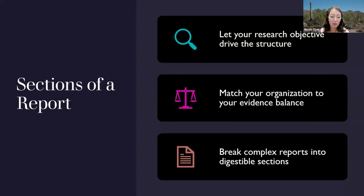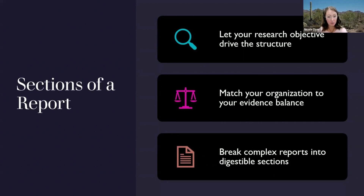After seeing that example, hopefully you're thinking of different ways to organize different parts of your research into sections within your report. Remember to let your research objective drive the structure and match your organization to your evidence balance. If you need to start with DNA evidence because that led you to a conclusion about someone — as it did with Martha — choose that approach. Be sure to break complex reports into digestible sections; it makes it a lot easier to present your evidence and makes it readable for anyone who will read your report.